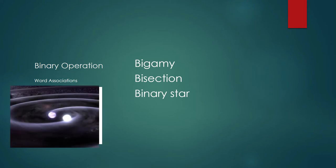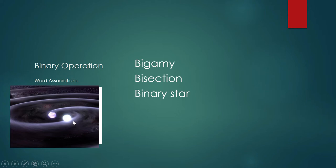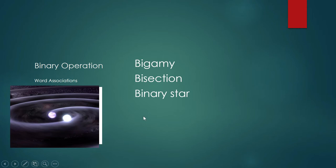Binary star — if there are five most awesome events in the universe, the binary star has to be one of them. A binary star is a star system composed of two stars. They spin around each other so closely that from afar they look like only one star. You can only tell they are two by analyzing the electromagnetic wave signatures using radio telescopes.